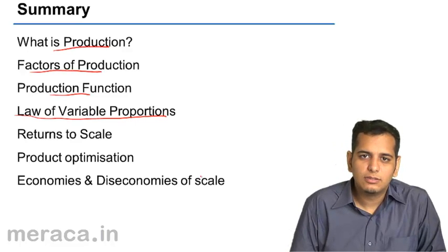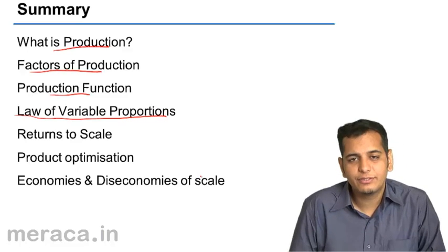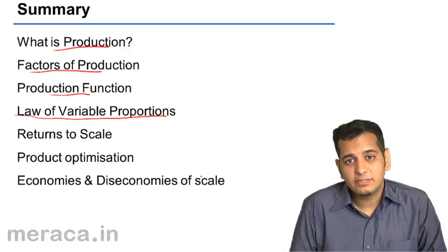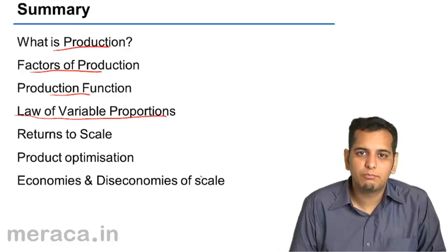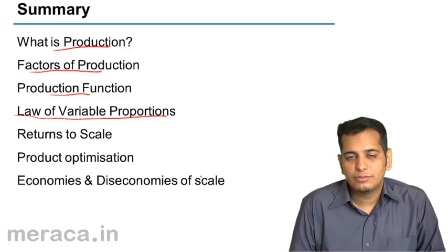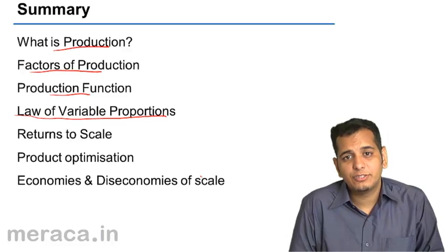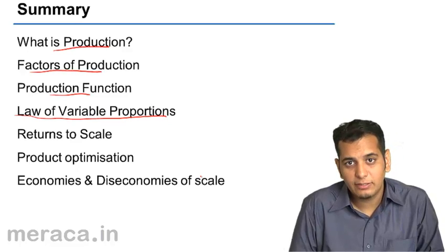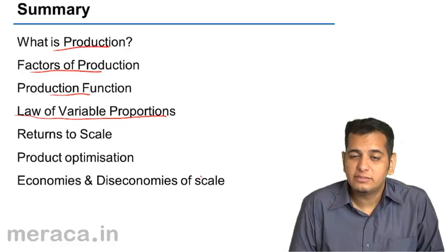The first is the stage of increasing returns, wherein the firm is experiencing increasing returns. Its production increases at a higher rate. This stage ends when the average product is maximum. And at this point, the MP meets AP.